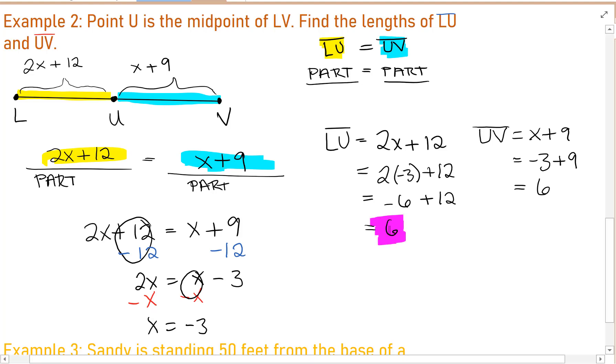That's what we needed. In order to check, we make sure that the lengths of each segment are indeed equal. Because if U is the midpoint of LV, then LU is equal to UV. They are the same distance.